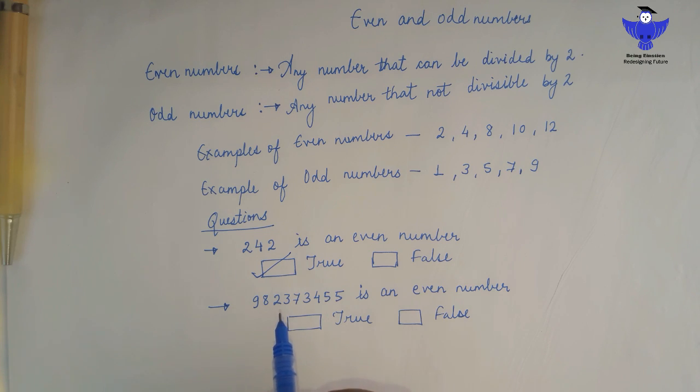Second question: 982373455 is an even number. This is a very big number, so it takes too much time to divide this number by 2.